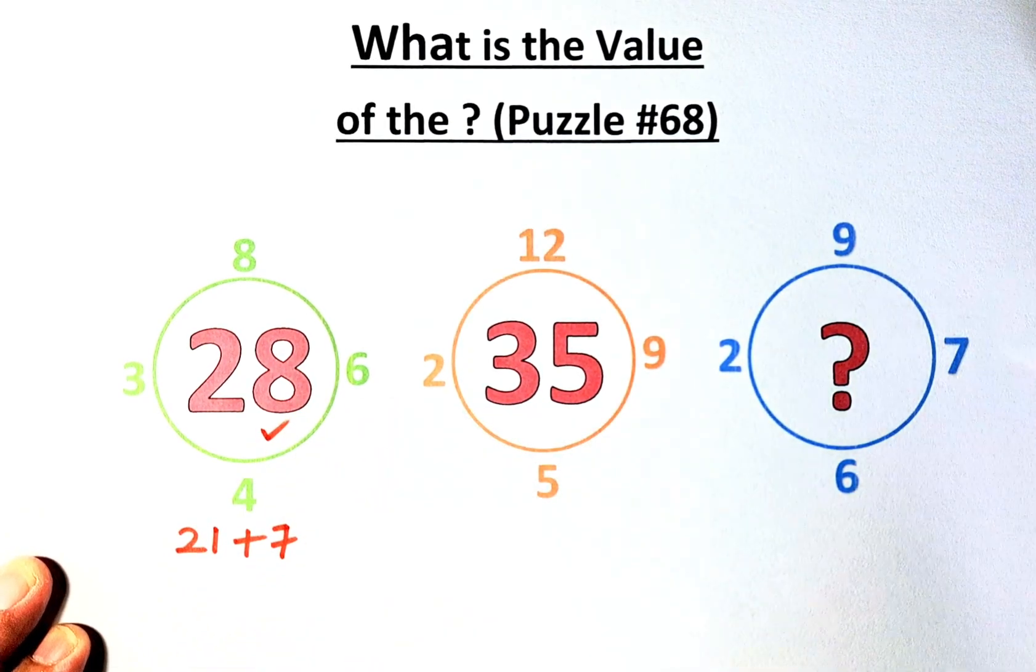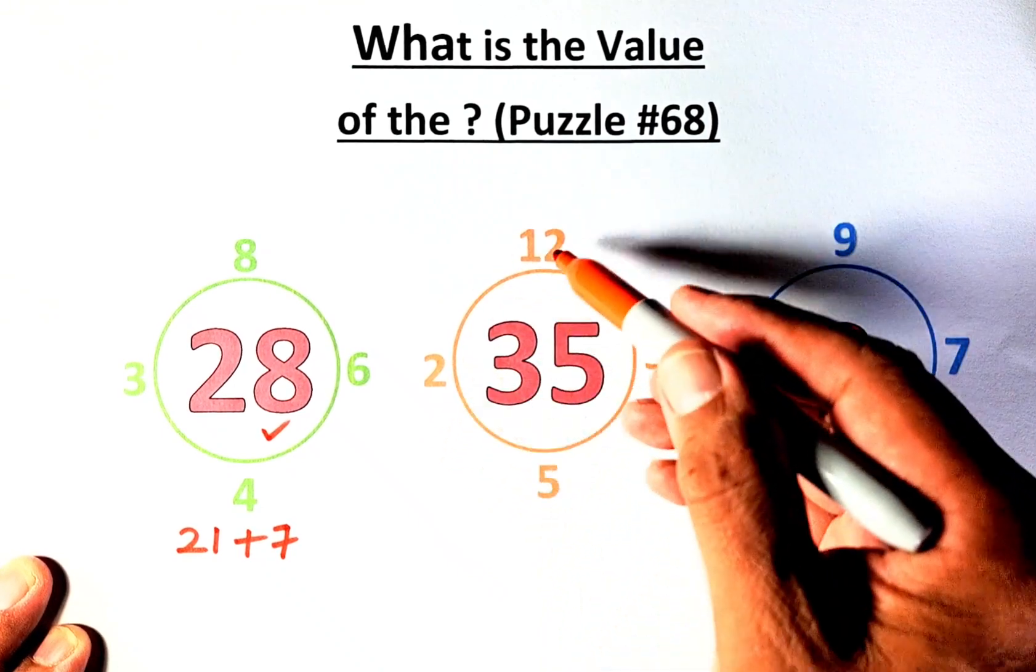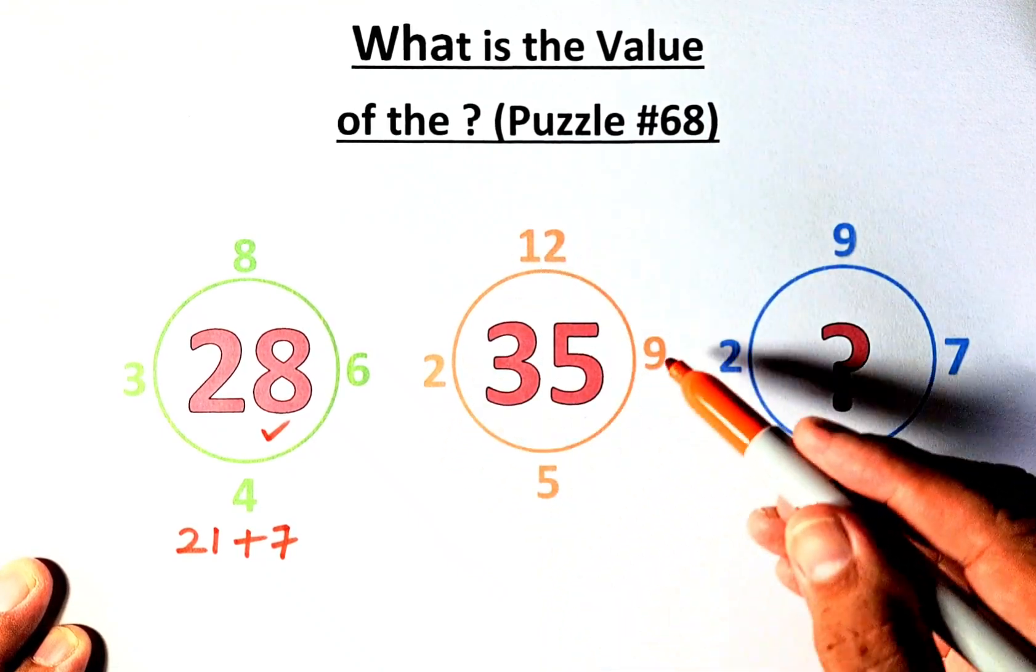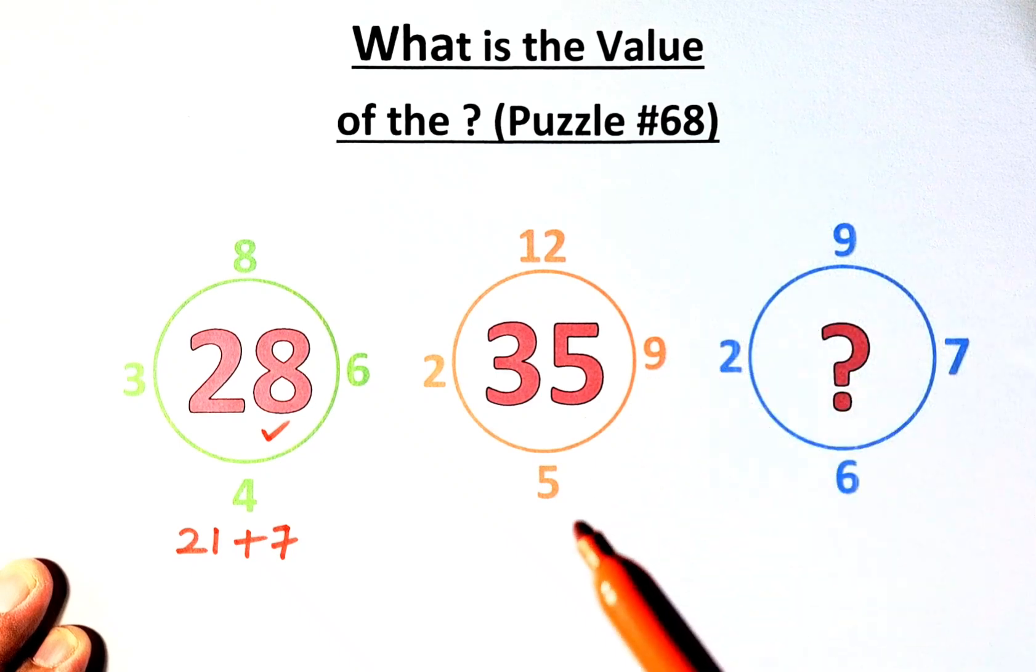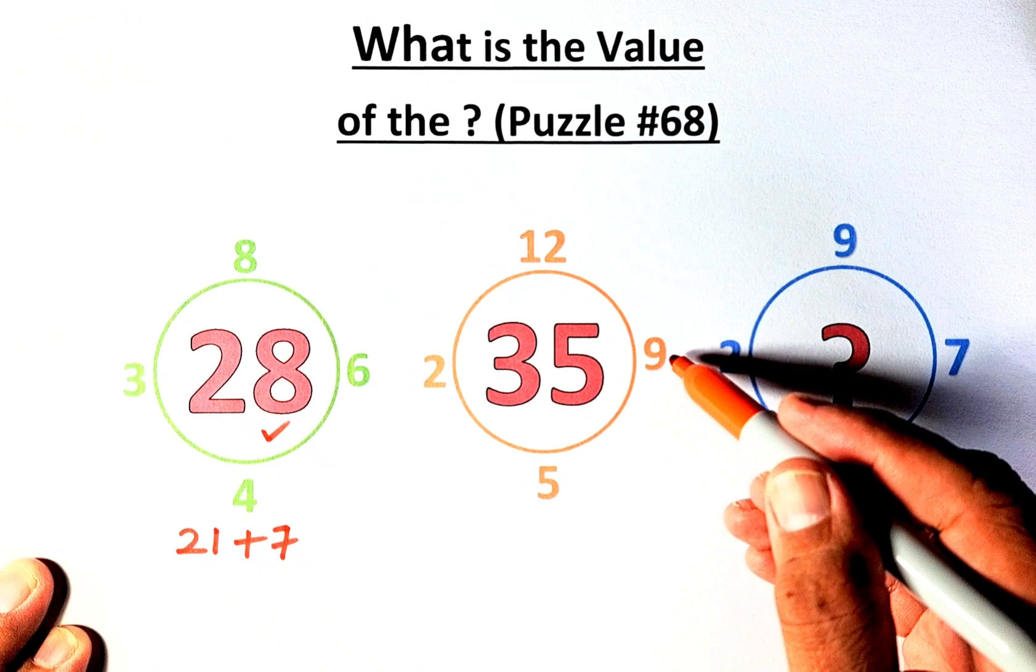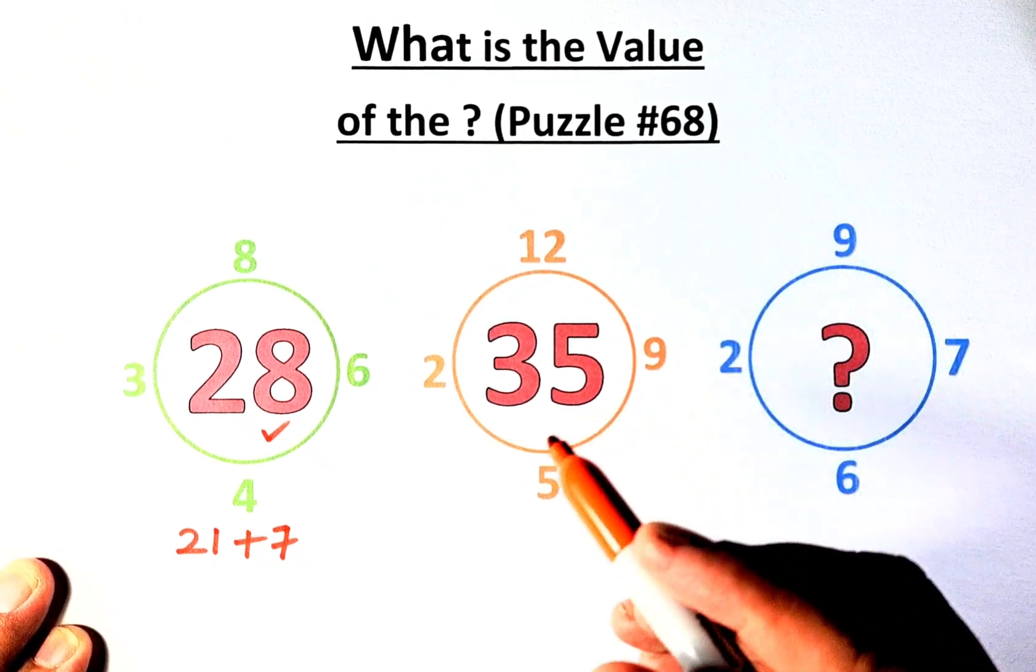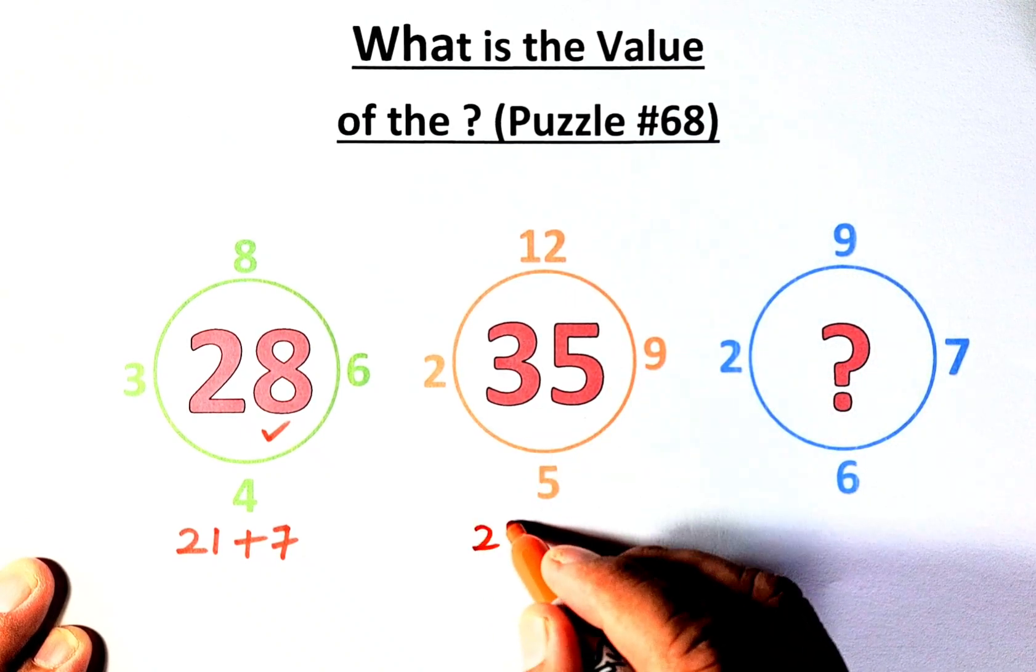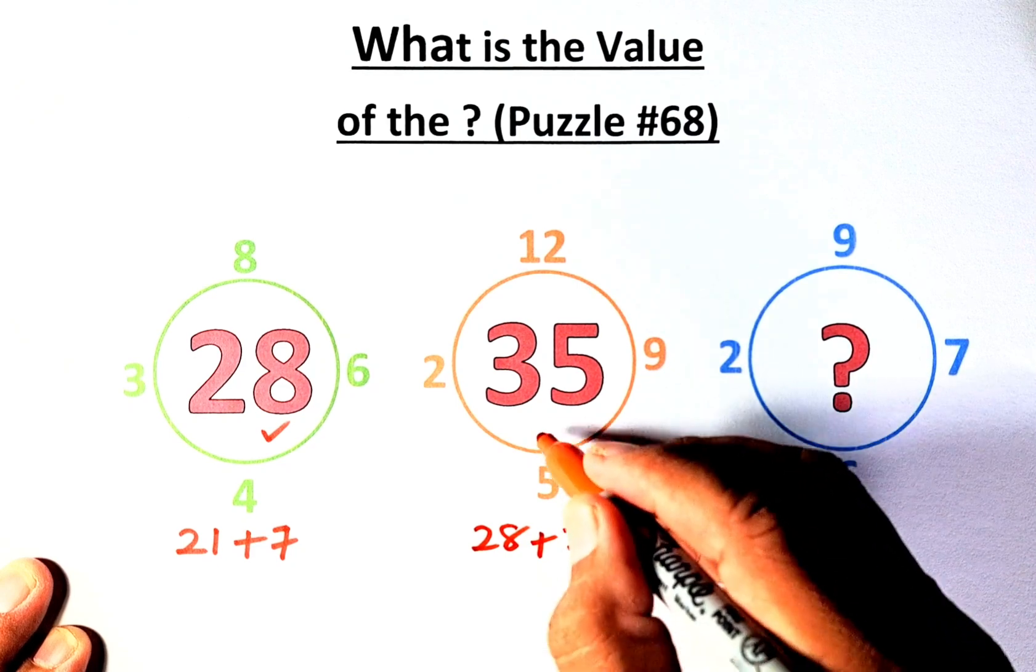Similarly, in the second circle, 2, 12, 9, 5. 2 plus 12 is 24. 24 plus 9 plus 5, which is 14, is 26. So it's 14 plus 12. 14 plus 14. 5 plus 9 is 14. 14 plus 14 is 28. And again, you need to add 7 to get 35.